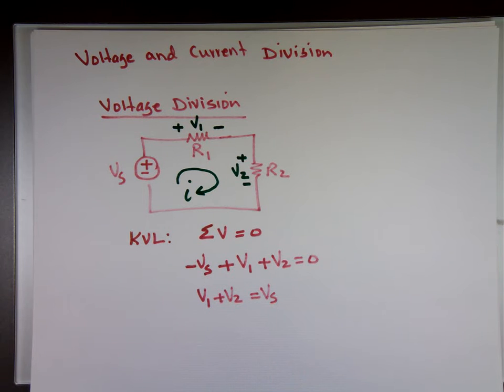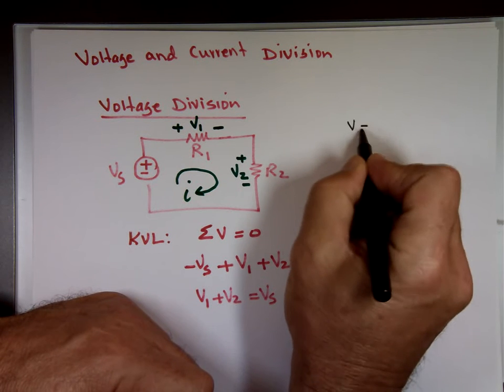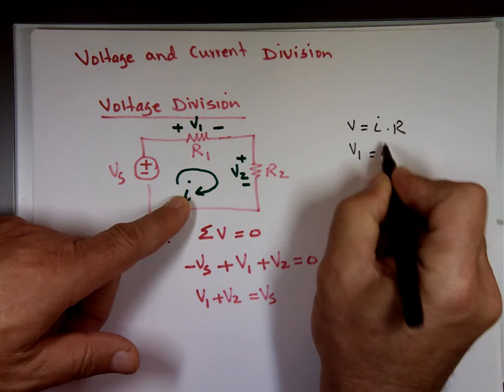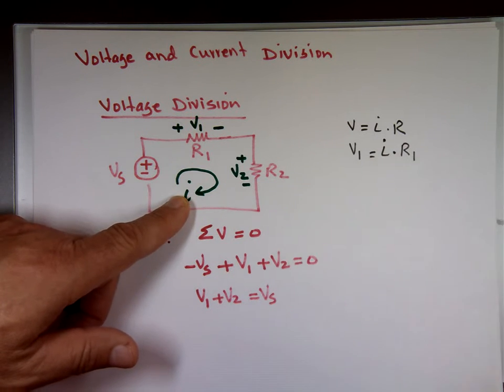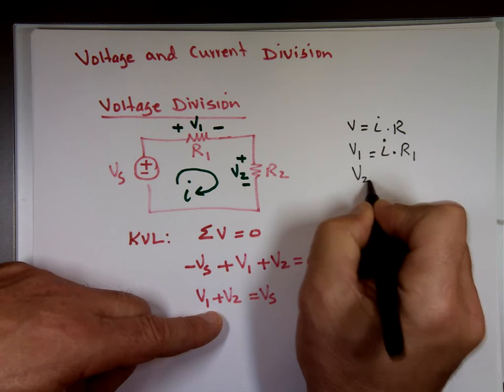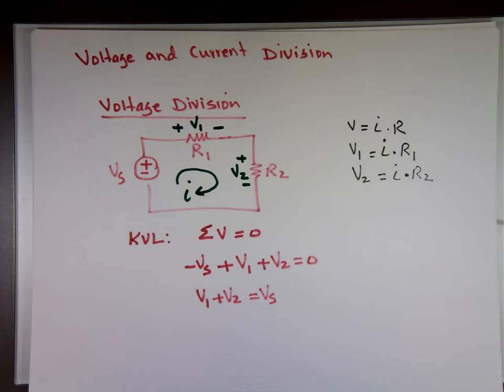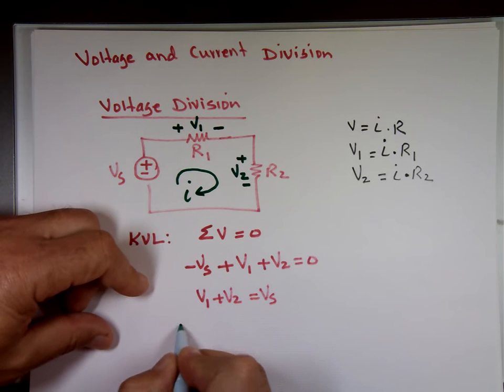Now, normally we know what Vs is. We don't know what V1 or V2. So you're going to have two unknowns, V1, V2. Is there a way to write V1 and V2 in terms of I? V equals IR. That means V1 is going to equal I, which is unknown to us, times R1. And V2 is going to equal I times R2. So if I do the substitution here in place of V1, let's put I times R1. In place of V2, I times R2 equals Vs.